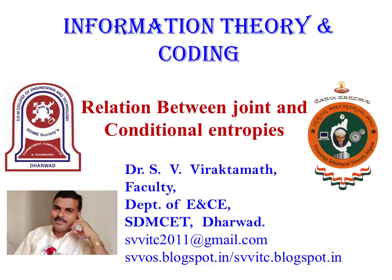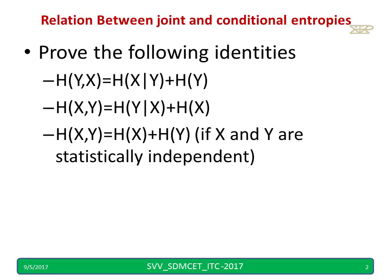Welcome to the tutorial on relation between the joint and conditional entropies. Sometimes in the question paper you may find such questions: Prove the following identities. H(X,Y) = H(X|Y) + H(Y), and similarly other two.